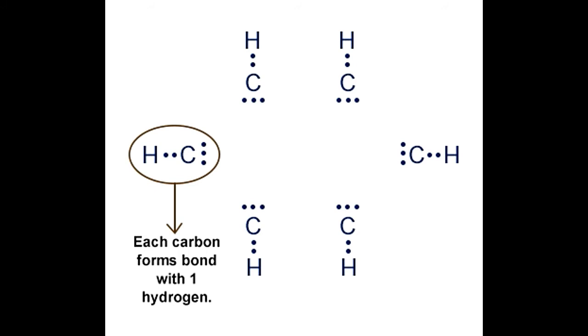Each carbon forms a bond with one hydrogen atom. Therefore, no hydrogen atom is left unpaired. However, each carbon atom has 3 unpaired electrons and requires 3 more to complete the octet.